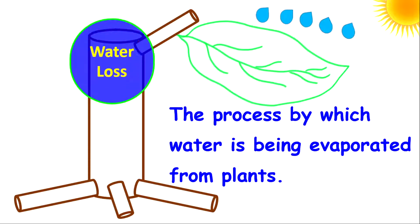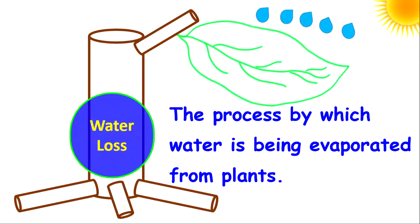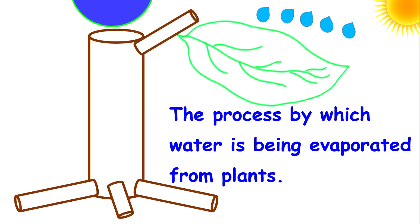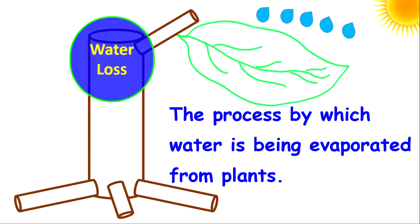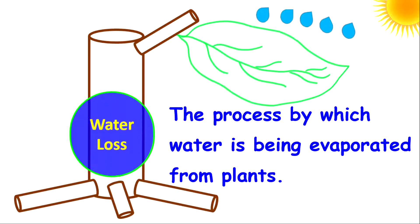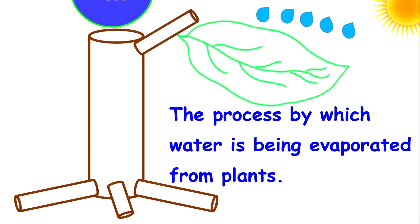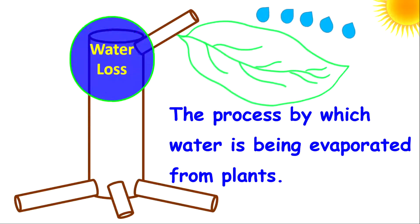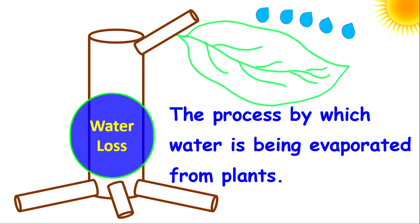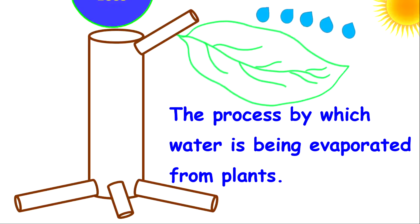Transpiration can be defined as the process by which water is being evaporated from plants. It can also be defined as the loss of water from the uppermost parts of the plant, including the leaves and the flowers.